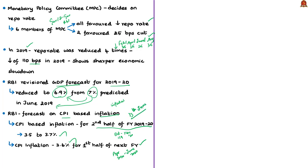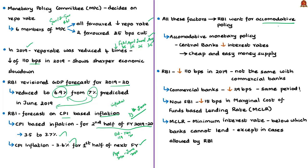Considering all these factors, the RBI adopted an accommodative monetary policy. In an accommodative policy, the central bank reduces its key policy rate to make money cheaper and easily available. Although the RBI has cut 110 basis points through its policy announcements in 2019, the same has not been transmitted by banks to borrowers — transmission was just 29 basis points. This means banks reduced their lending rates to borrowers by only 29 basis points, so the RBI's intention to infuse money into the economy was not fully achieved.